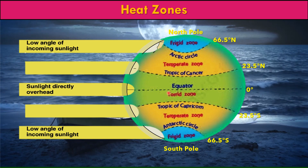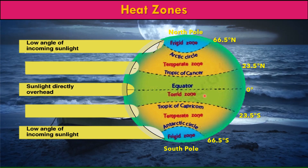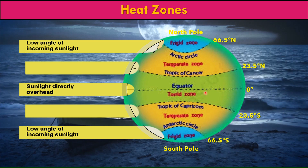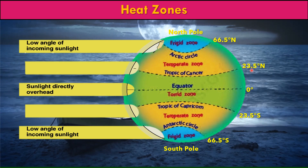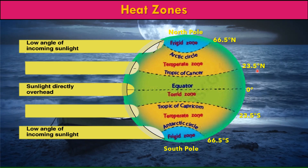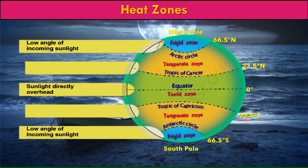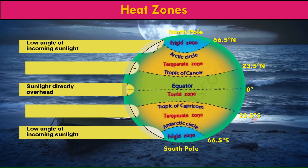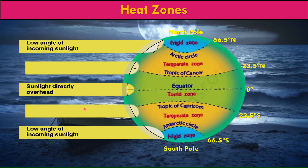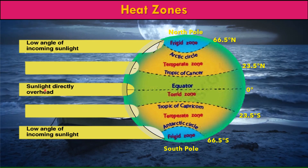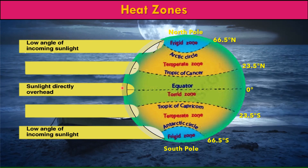The first is the torrid zone, also known as the tropical zone. It lies between the Tropic of Cancer at 23.5° north and the Tropic of Capricorn at 23.5° south. Here the sun's rays are almost vertical throughout the year. This zone receives maximum heat and is the hottest zone of the earth.